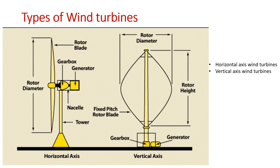A wind turbine extracts energy from moving air by slowing the wind down and transferring this energy to a spinning shaft, which usually turns a generator to produce electricity. The power in the wind available for harvest depends upon both the wind speed and the area swept by the turbine blades.